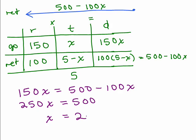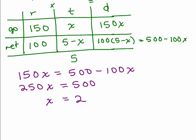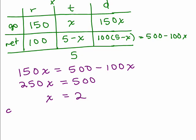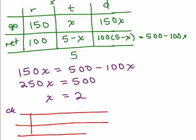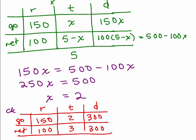I think we got 2 for x the last time we did a problem like this, but that doesn't always happen for sure. Alright, so let's do the check chart. Going and returning the rates we already knew. The time we now know is 2 going, which means 3 hours for the return trip. And of course, that makes sense that it's going to take longer when you're only going 100 miles an hour.